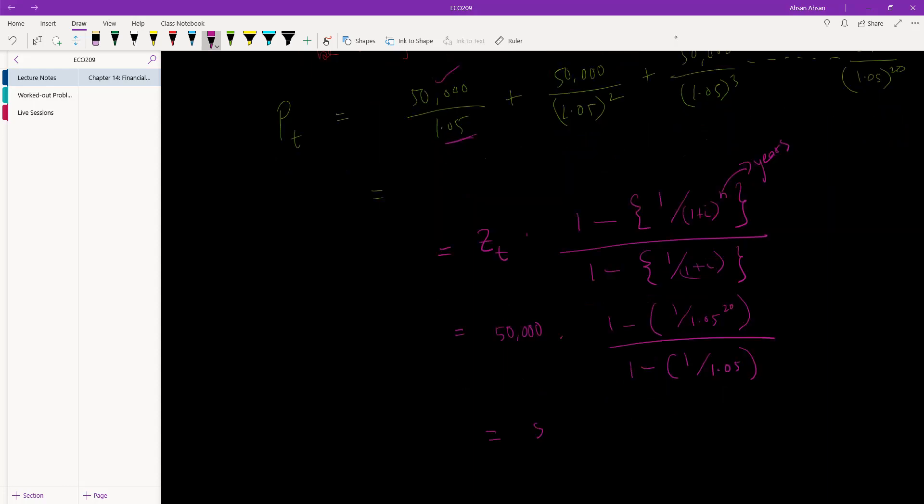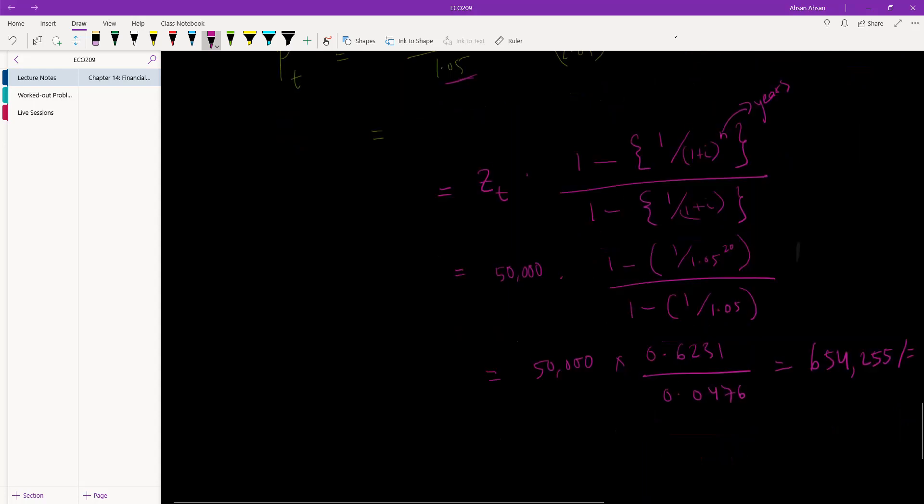And so if we get our calculators out, what we are going to get - so over here we get 0.6231, 0.0476, so it's 654,255.